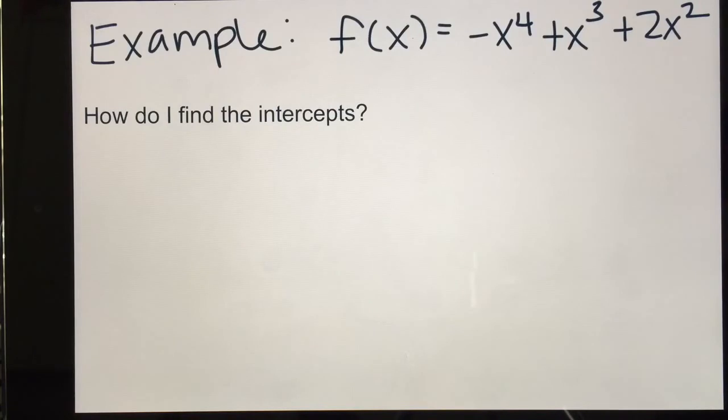So here's the example we have: f of x equals negative x to the fourth plus x to the third plus 2x squared. First we're going to go ahead and find the intercepts. So if you guys have a calculator at home, go ahead and try graphing this one.